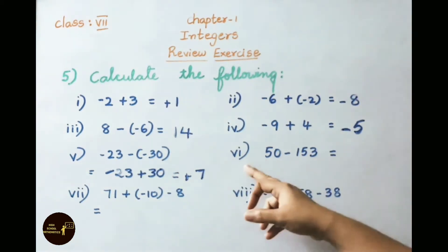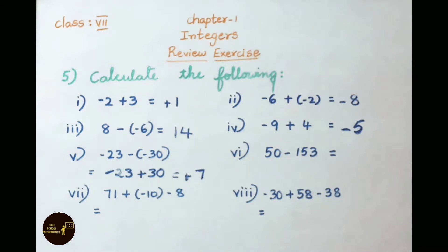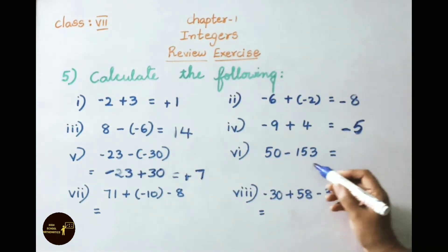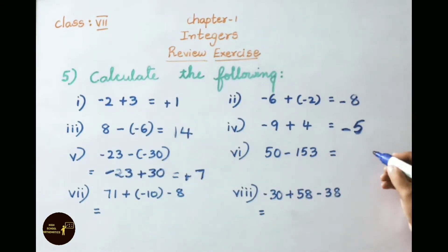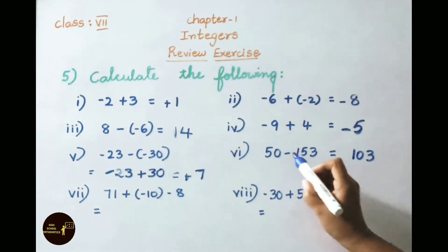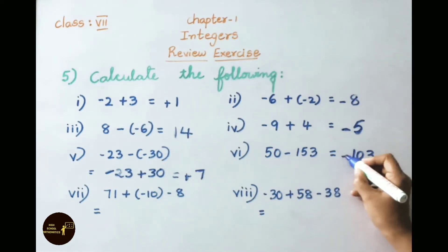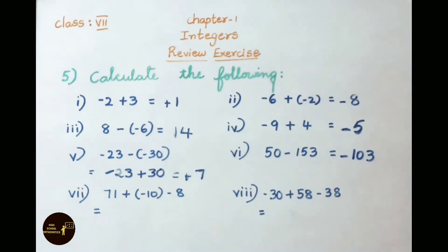See the sixth sum: 50 minus 153. Opposite sign is there, so we have to do subtraction. 153 minus 50 equals 103. Since 153 is greatest and its sign is minus, keep a minus sign. So the answer is minus 103.